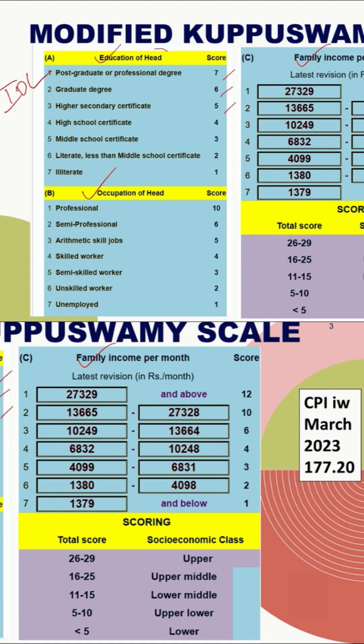Based on the education of the head of the family, the following scores will be given. Based on the occupation of the head, the following scores can be given, and the family income per month will be scored as shown here.